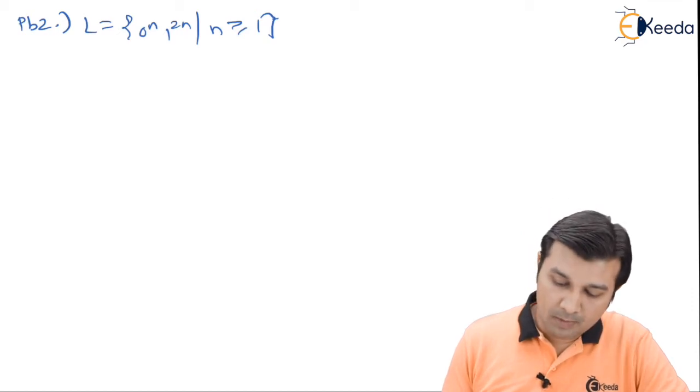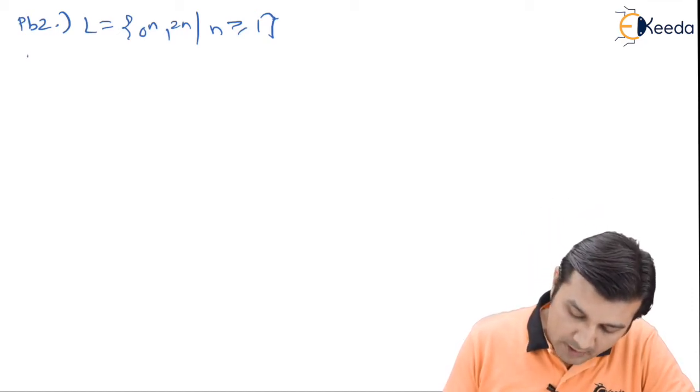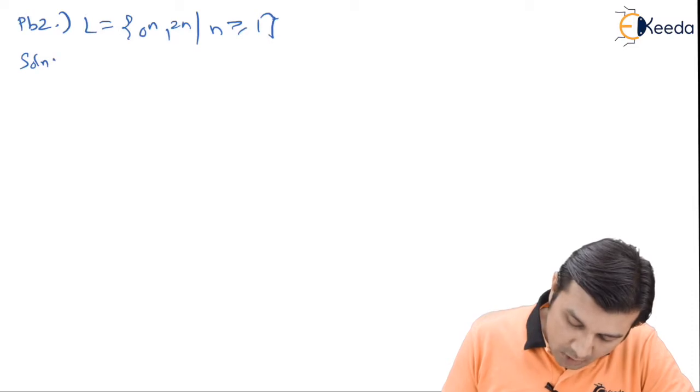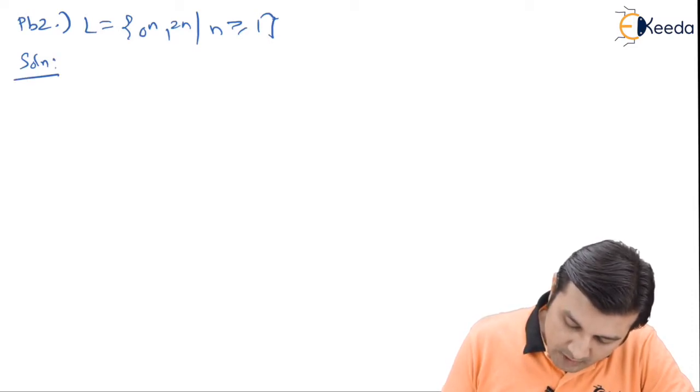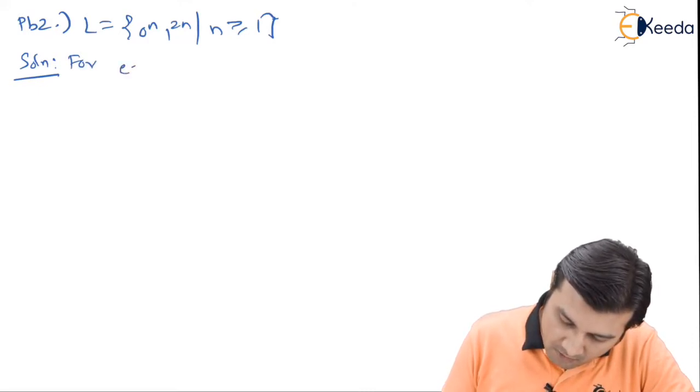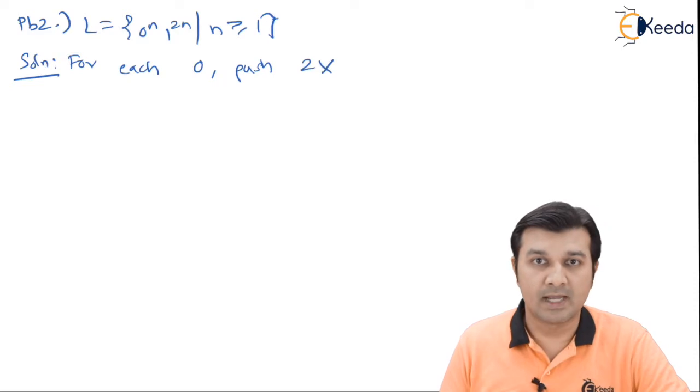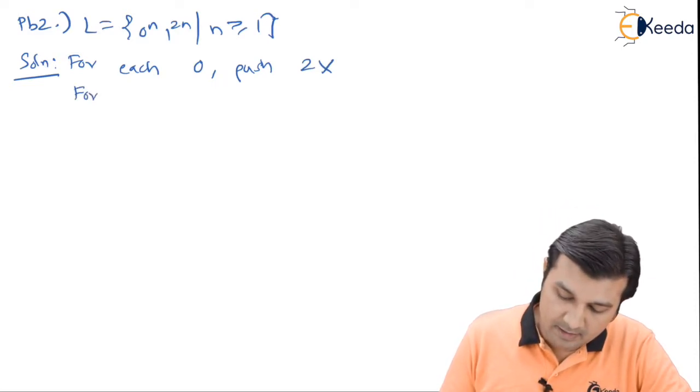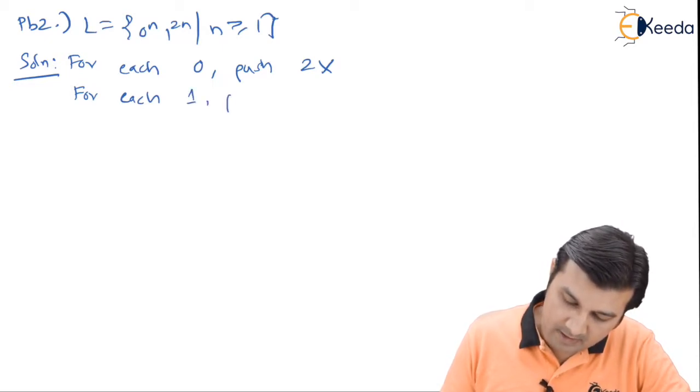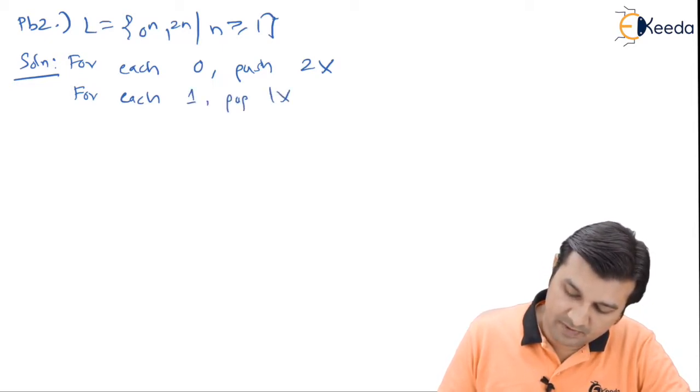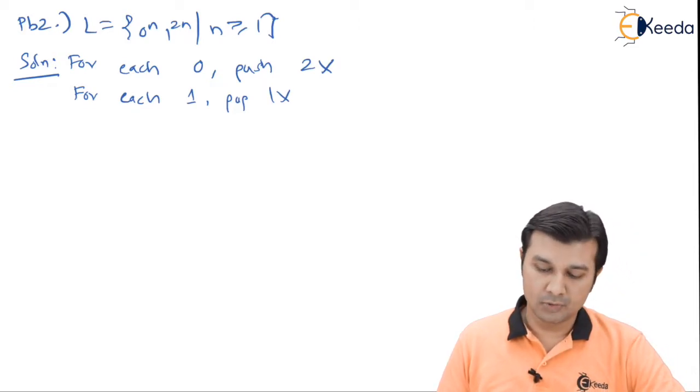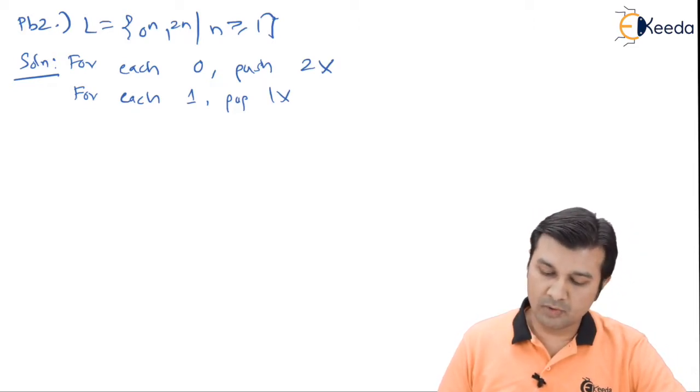Having come back, if you look at the problem it says L equal to 0 raised to n, 1 raised to 2n. To solve with the logic, my solution says: for each 0, push 2x on the stack, and for each 1, pop 1x from the stack.